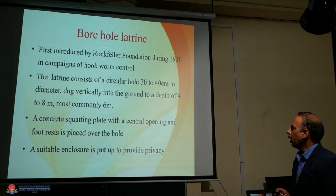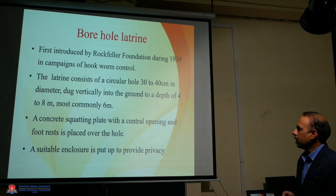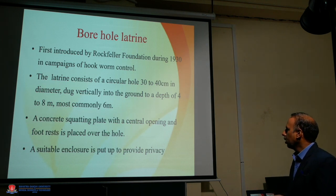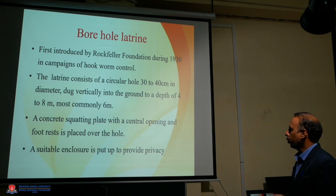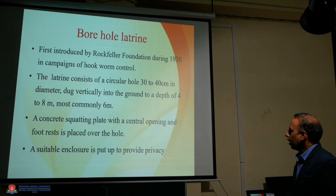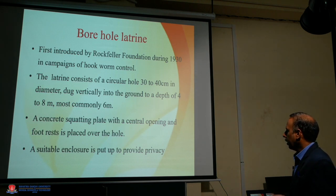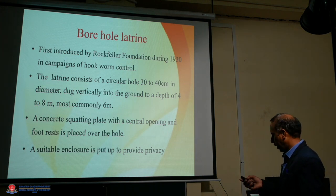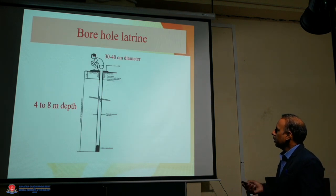The first sanitary latrine type is the borehole latrine. It was first introduced by the Rockefeller Foundation during 1930 in a campaign of hookworm control. The latrine consists of a circular hole 30 to 40 centimeters in diameter, dug vertically into the ground to a depth of 4 to 8 meters, most commonly 6 meters. A concrete squatting plate with a central opening and footrest is placed over the hole, and a suitable enclosure is put up to provide privacy.